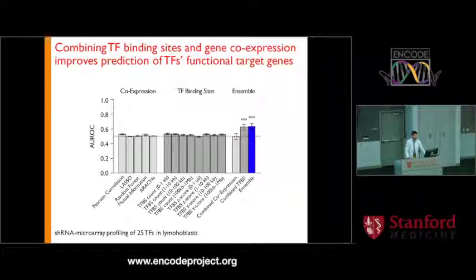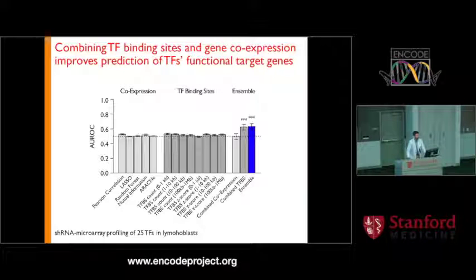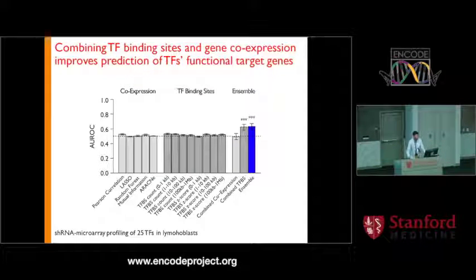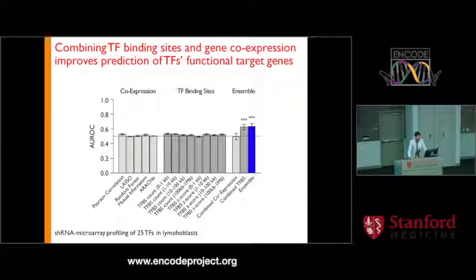A harder problem is: given a distribution of transcription factor binding sites, can we predict the target genes of those transcription factors? This relates to connecting enhancers to target genes, but it's even harder because we want to know whether a specific transcription factor is likely to regulate a target gene. I'm learning on shRNA microarray experiments where each of 59 transcription factors was knocked down in lymphoblastoid cells to identify differentially expressed genes. Strikingly, a number of methods used to build transcriptional networks — including the ARACNE method, which is widely used — show no enrichment whatsoever for targets found by shRNA knockdowns.